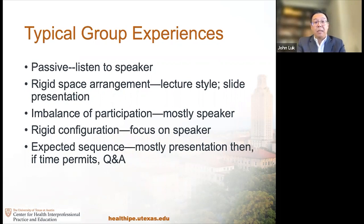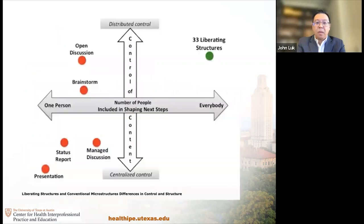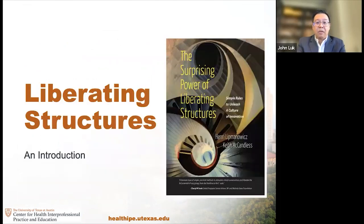Liberating Structure operates on similar elements, thinking about how to create that structured invitation to join, how to arrange the space, what materials are needed, how participation could be distributed or redistributed, and how groups can be configured to maximize interaction and learning. The sequence of steps and timing are also factored in. These variations within the five elements really enable greater inclusion, equity, participation, and diversity of thinking and contribution. I'm very pleased to introduce this as a modality to empower and liberate group learning, especially interprofessional groups.